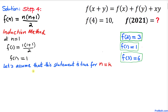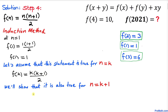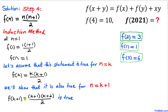Now let's assume the statement is true for n = k, meaning f(k) = k·(k + 1) / 2. We will now show that this is also true for n = k + 1, that is, f(k + 1) = (k + 1)·(k + 2) / 2.